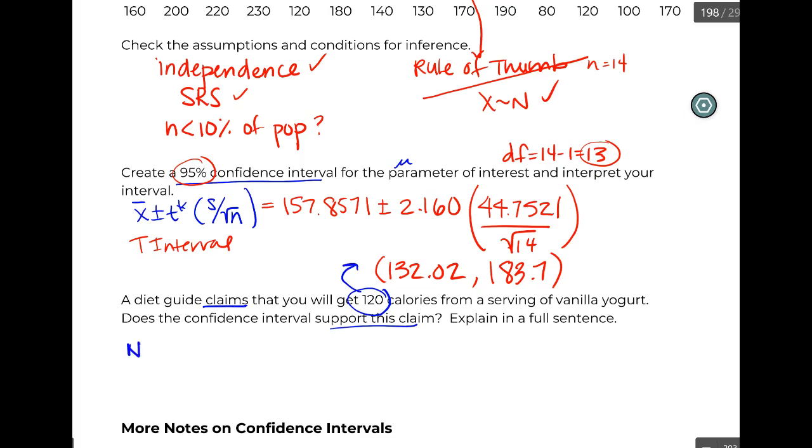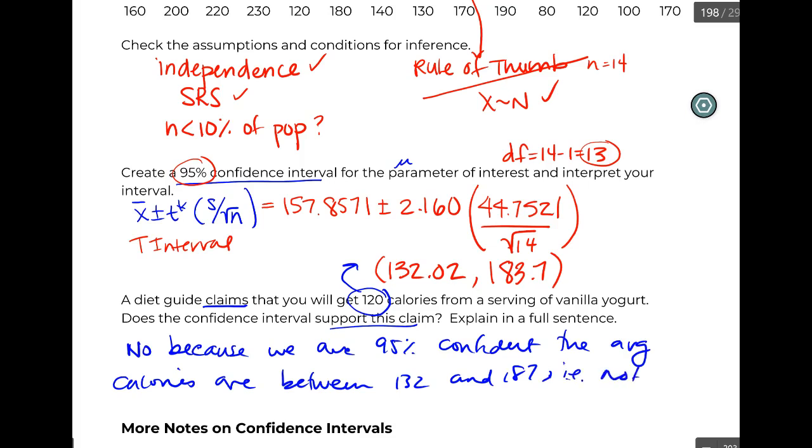So we'd write a sentence about: no—I don't like the wording there—because we are 95 percent confident the average calories are between 132 and 187, i.e., not 120.